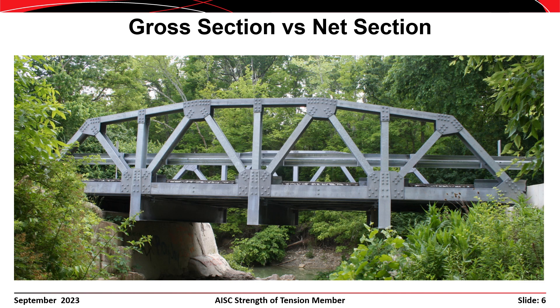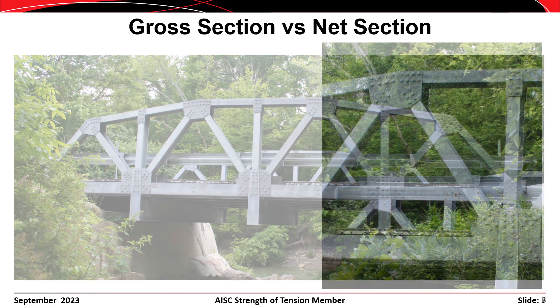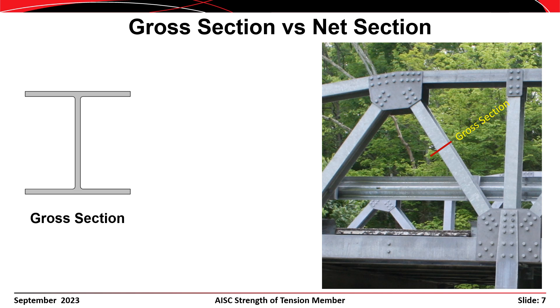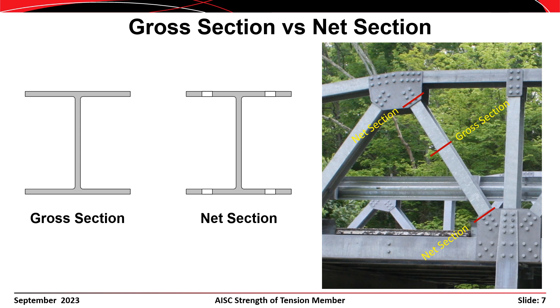A pony truss bridge is a good example to illustrate the difference between a gross section and a net section since the structure is exposed. If we zoom in on one of the members of that bridge, the portion of the member between the connections at its ends is called the gross section. The gross area Ag is simply the total cross-sectional area. The net section, in contrast, is a section that is cut at the ends of the member where it is connected to the gusset plates.